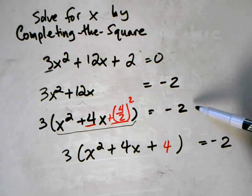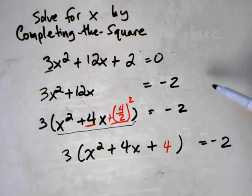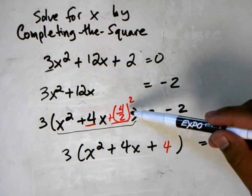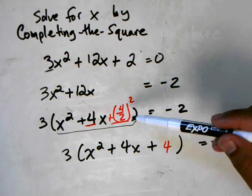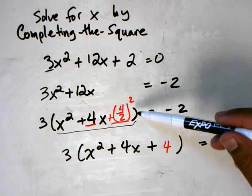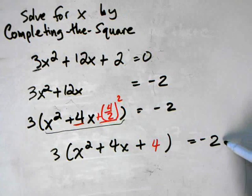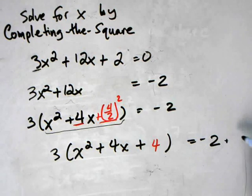What I neglected to do in the previous step is to balance the other side of the equation. If you notice here, I just introduced this new number out of nowhere. That's not algebraically correct unless we balance the other side, so normally we would have to add 4 to the right side.